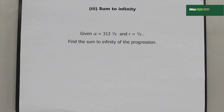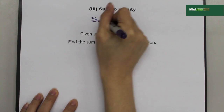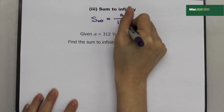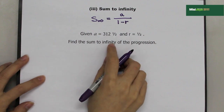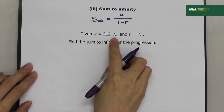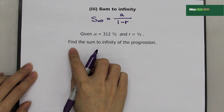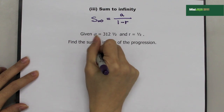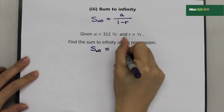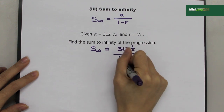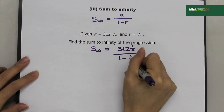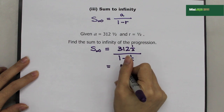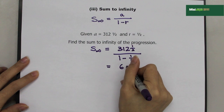The last formula to memorize for GP is the sum to infinity: S infinity equals A over 1 minus R. Example: given A equals 312.5 and R equals one half, find the sum to infinity. Substituting: 312.5 over 1 minus 0.5. Using the calculator, the answer is 625.